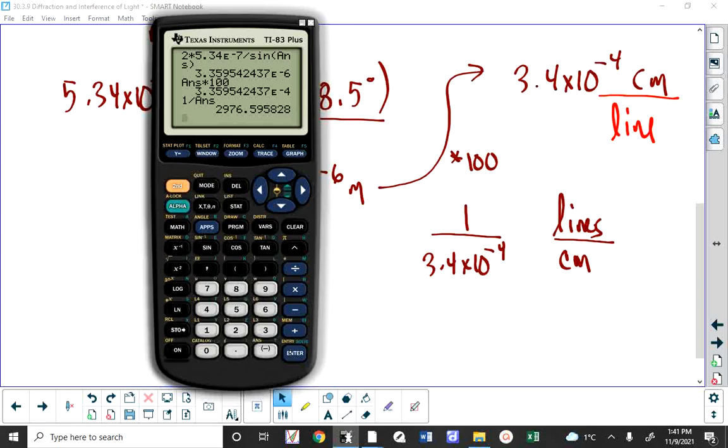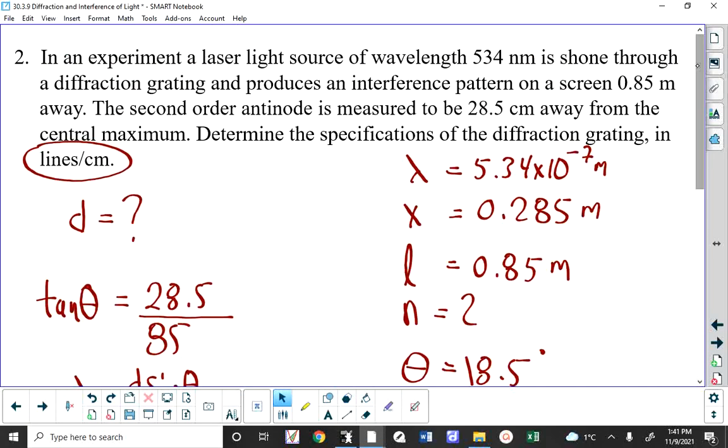Go ahead, Farhan. You could use lines per meter. And I don't care for your lab tomorrow. I'm probably just going to say on the piece of paper you get, find out the specifications of the diffraction grating. And if you want to use lines per centimeter or lines per meter, you can. The only reason why I stuck with that here is because that's what the question says. And you might have an exam question that says how many lines per centimeter, or you might have one that says how many lines per meter.